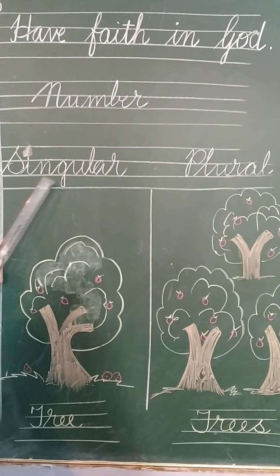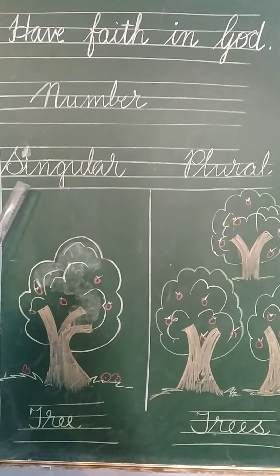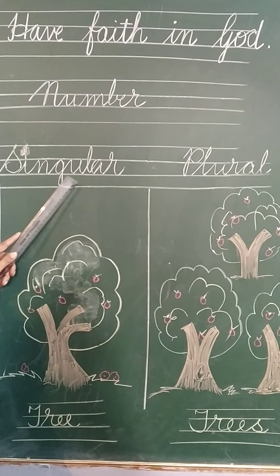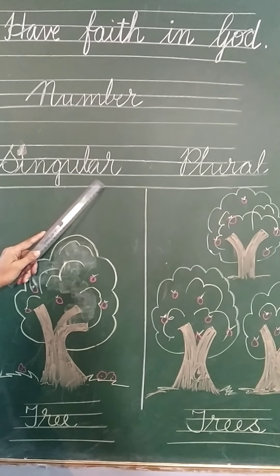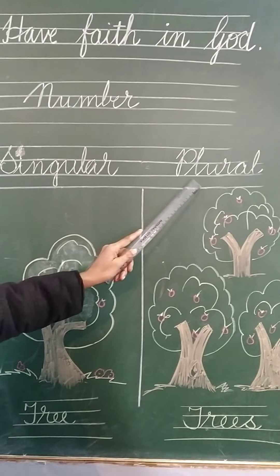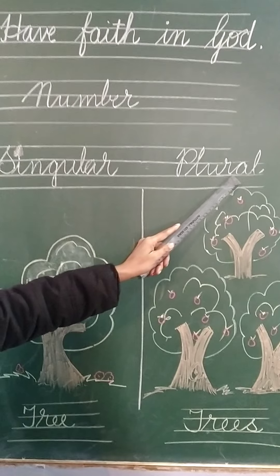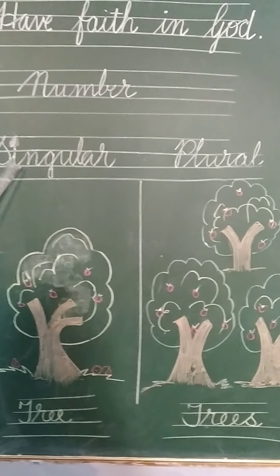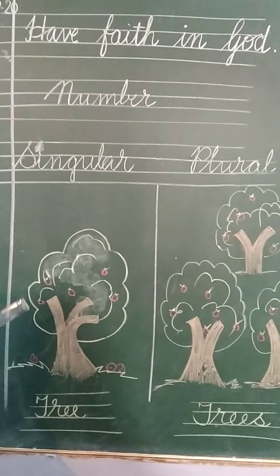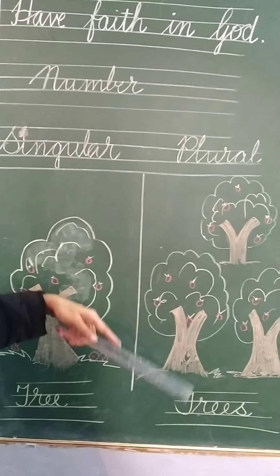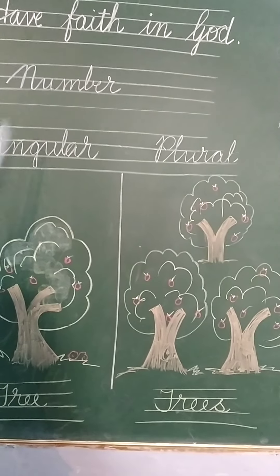So you have to write: singular — S, I, N, G, U, L, A, R. Singular. And plural — P, L, U, R, A, L. Plural. Singular means a thing is one. Plural means more than one.